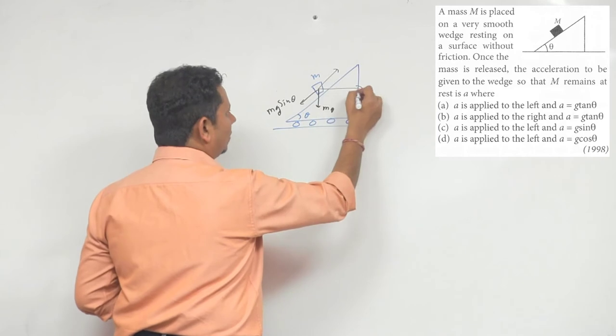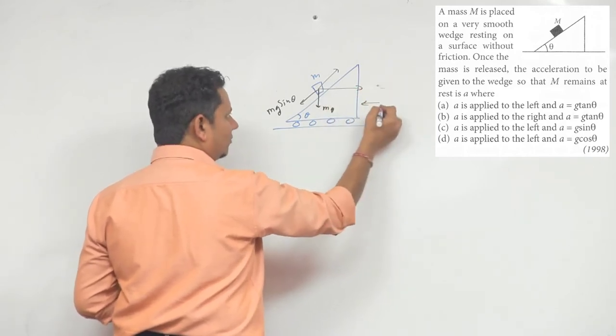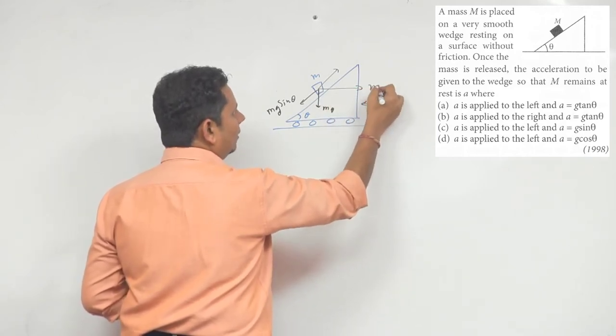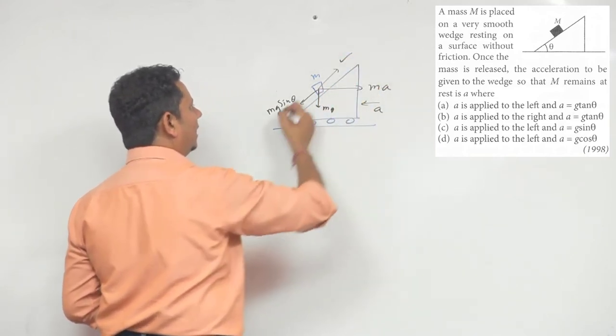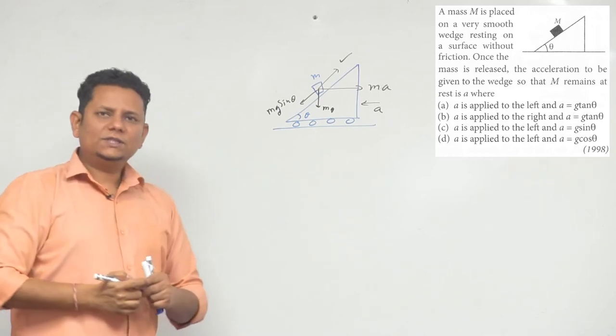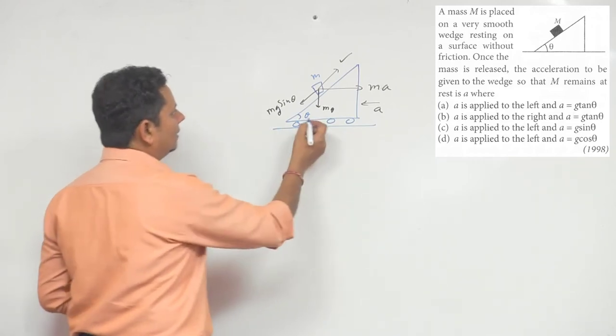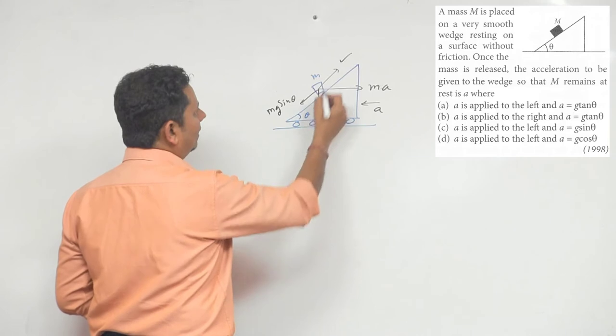To stop this, we need a force in this direction. So this pseudo force will act here if we move it in this direction with an acceleration. The pseudo force will act backward, and the component of this pseudo force will balance it, and from that we'll get the value of a.